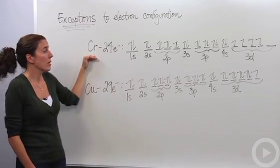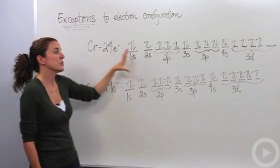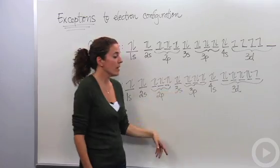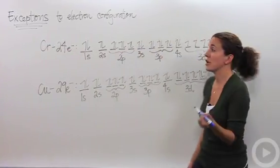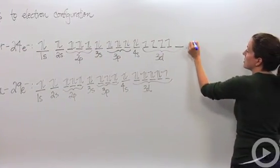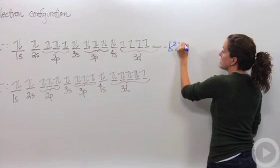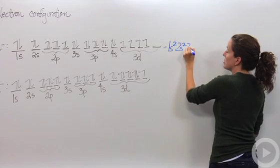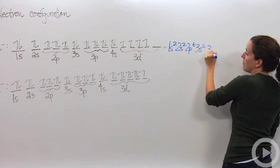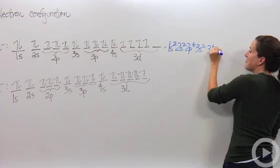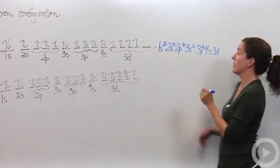Let's talk about chromium. Chromium is a transition metal, it has 24 electrons, and here is the orbital diagram. If we were to make the electron configuration for this, we would write 1s2, 2s2, 2p6, 3s2, 3p6, 4s2, 3d4.